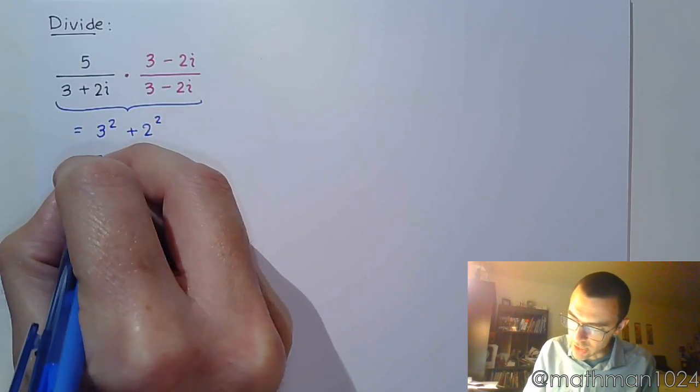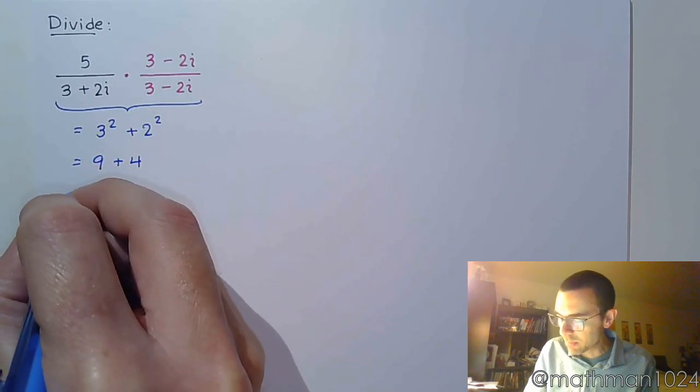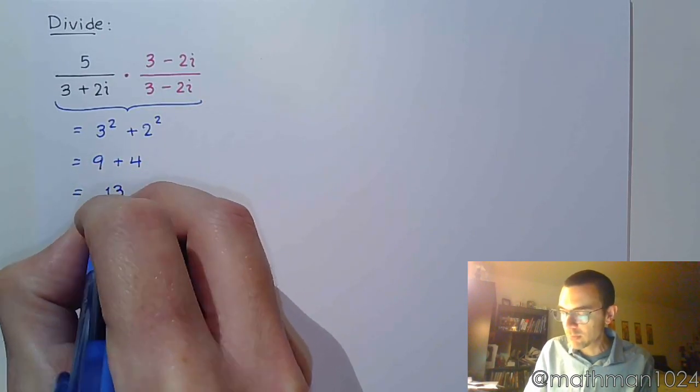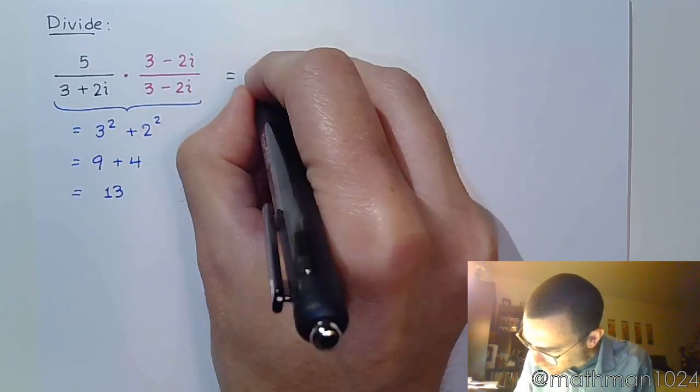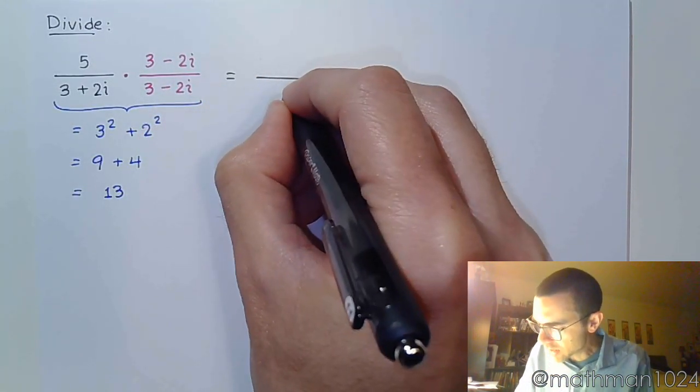We just work this out. 3 squared is 9, 2 squared is 4, and they combine to give us 13. So that's going to be the denominator of my fraction now, 13.